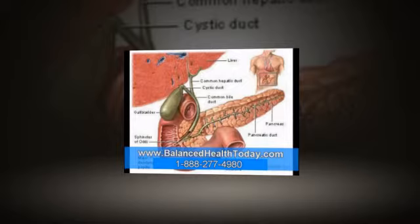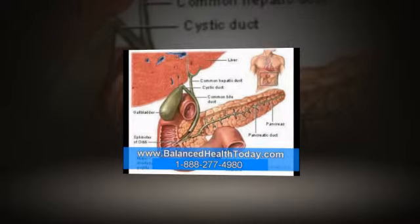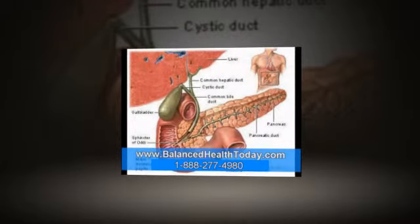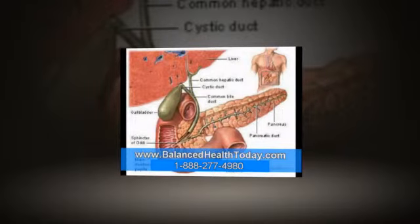Gallstones and biliary sludge disrupt the normal flow of bile, causing three different types of problems. The first set of problems is related to not getting enough bile into the intestines. The second set of problems occurs when toxins, unable to leave the body through the bile, back up and accumulate in the liver and the bloodstream. The third set of problems occurs when the bile, unable to get into the intestines, backwashes into the pancreas and liver.